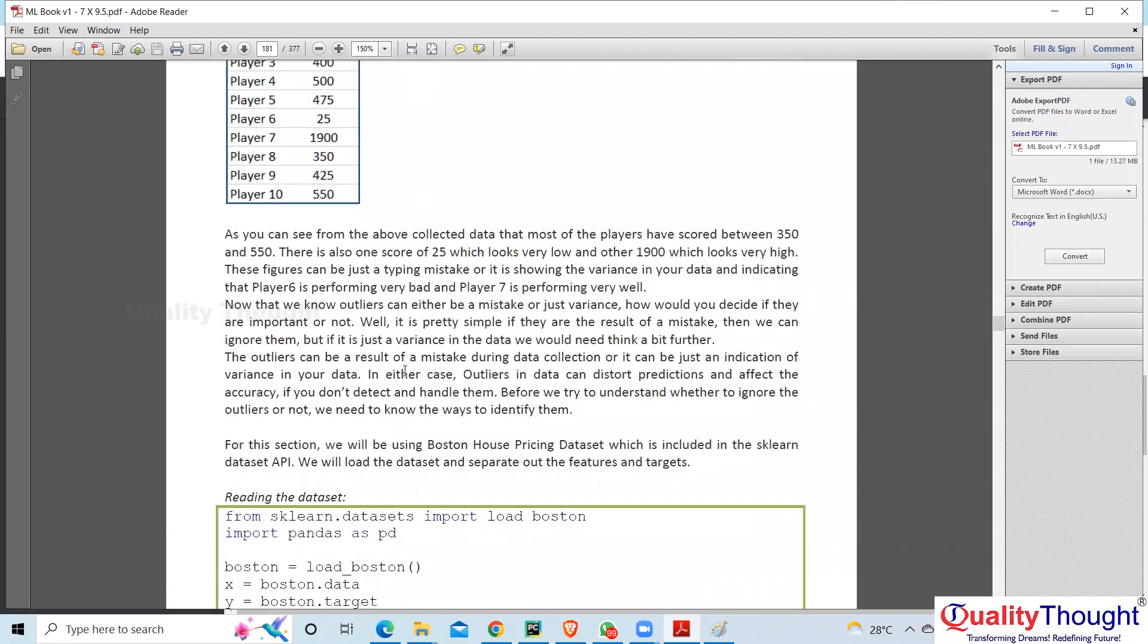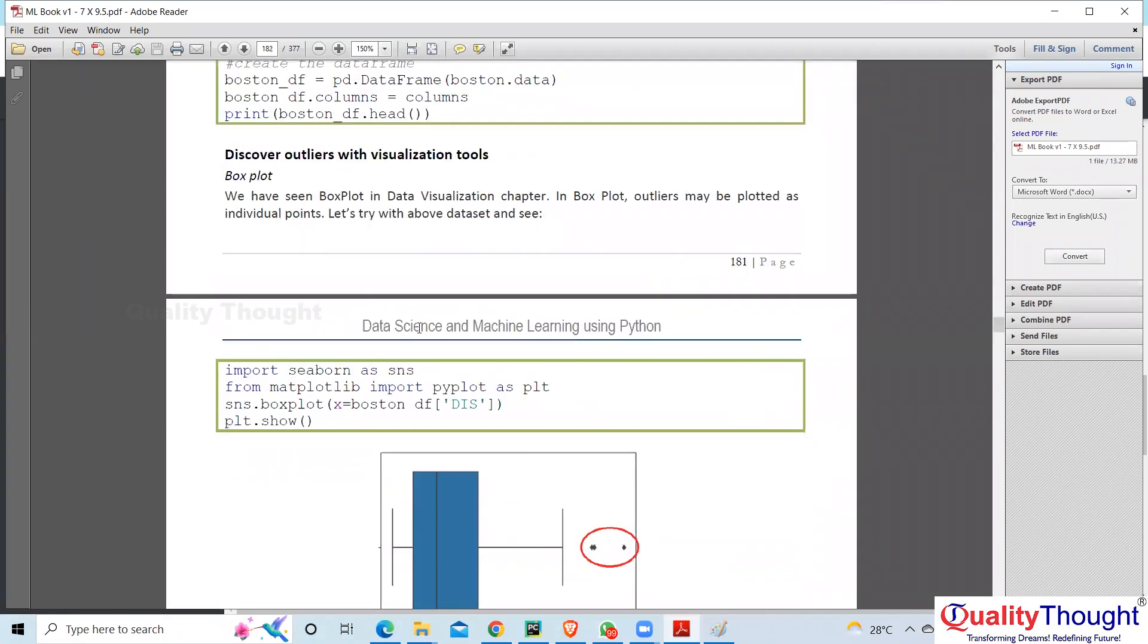Handling outliers, how do you handle outliers? So box plot is the best way to visualize outliers, isn't it?